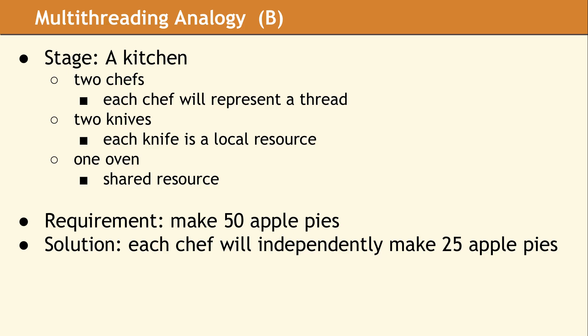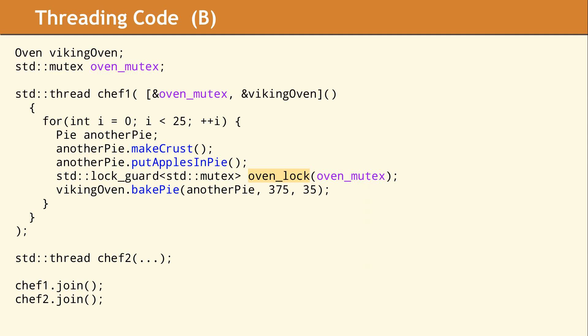In this example, our requirement is to make 50 apple pies. To do this, we're going to add a shared resource — namely an oven. At the beginning of this code, we set up our resource, which is an oven, and we set up a mutex to control access to this oven. A mutex is nothing more than an object which can be locked by one thread at a time. Then inside the body of the chef thread, we loop 25 times: set up a new pie, make a crust, put the apples in the pie, then acquire a lock on the oven mutex and bake the pie. The second chef does exactly the same. This means that while a pie is baking, it is very possible that both chefs will be idle — one is baking the pie while the other is waiting for access to the oven.